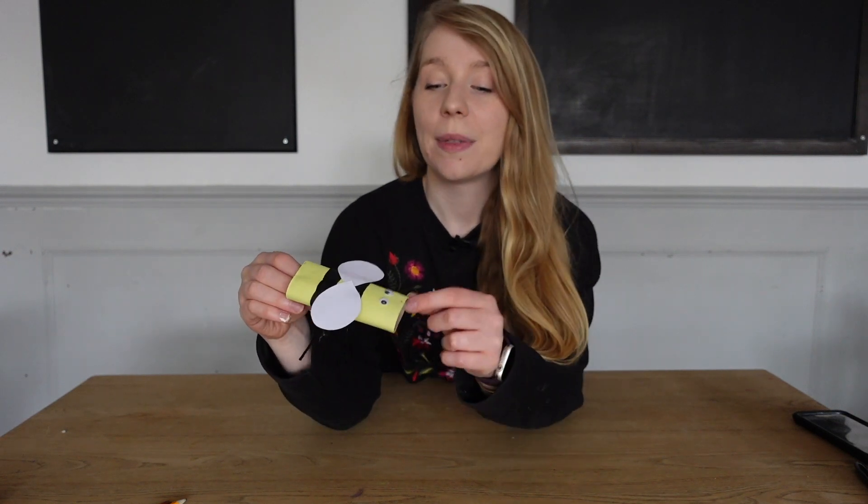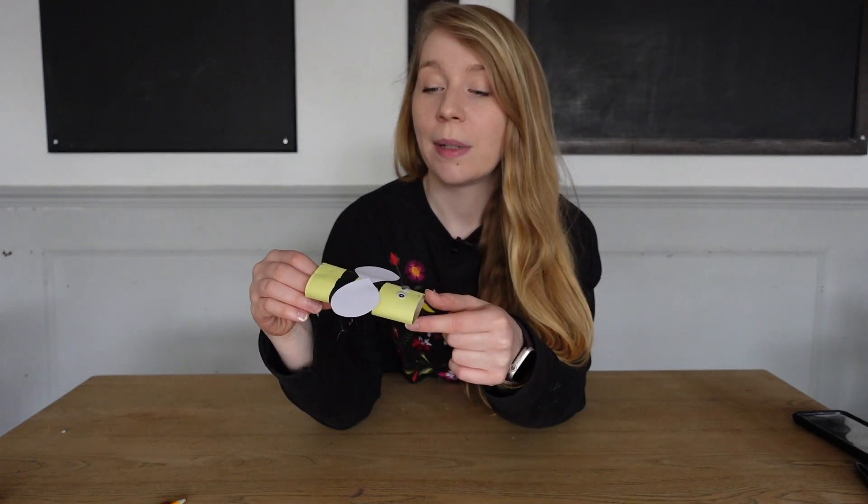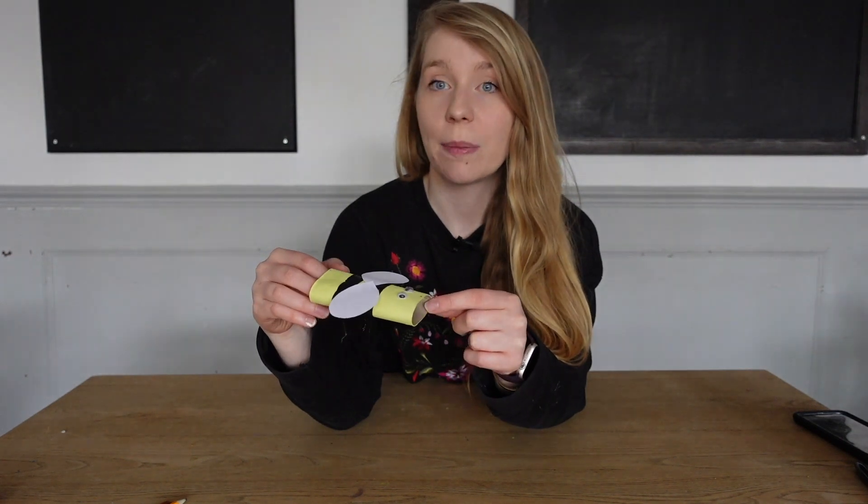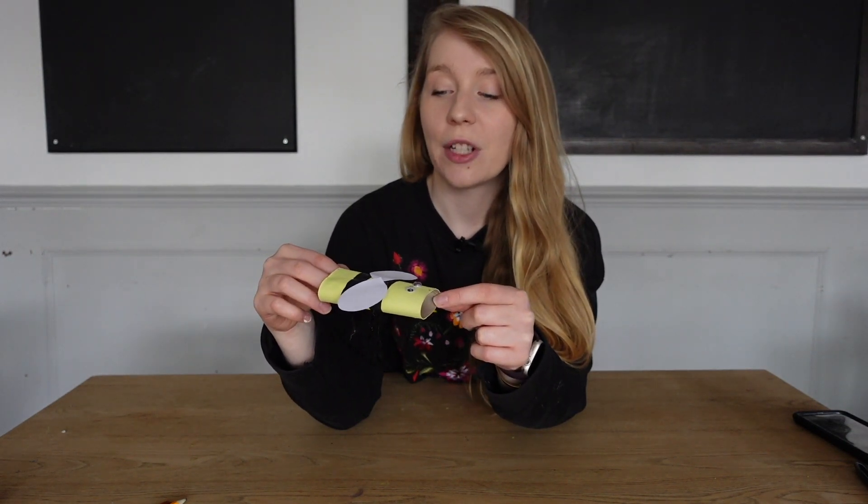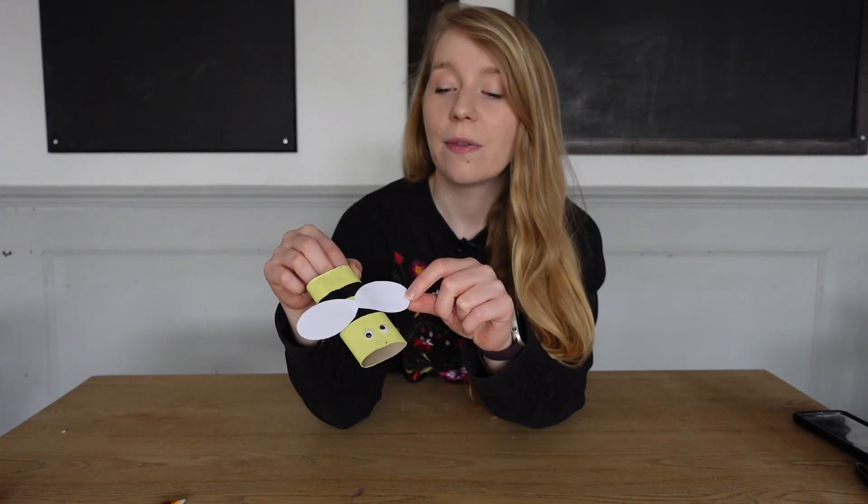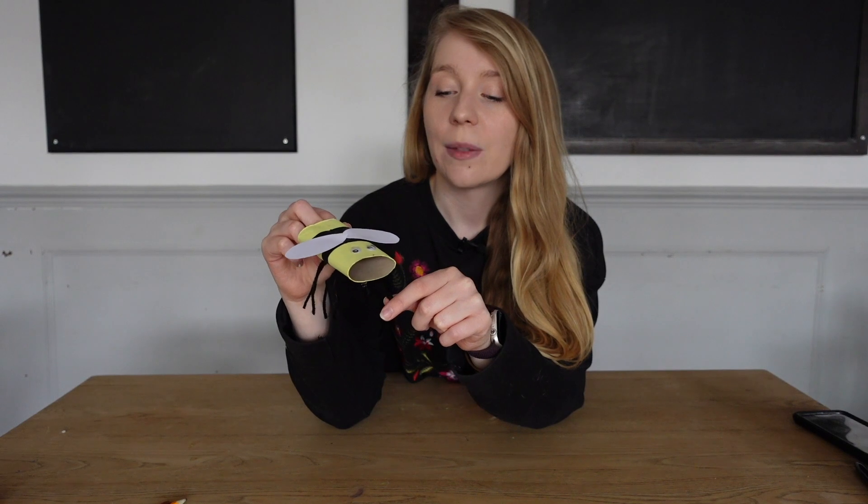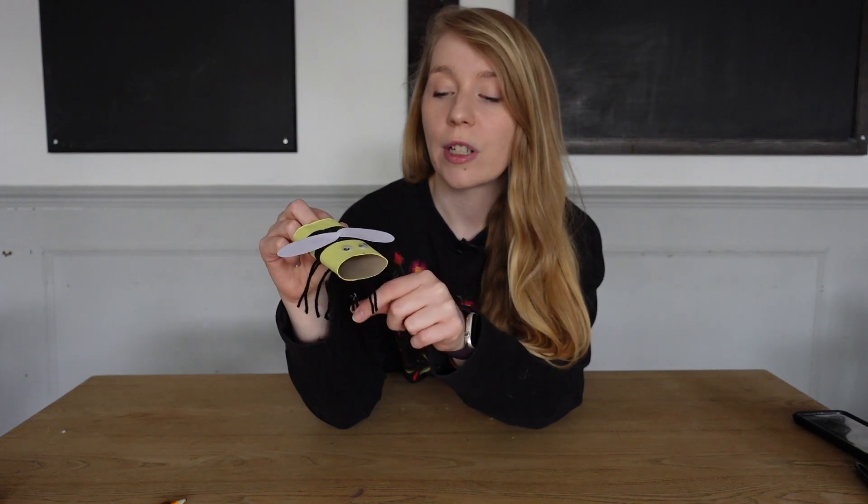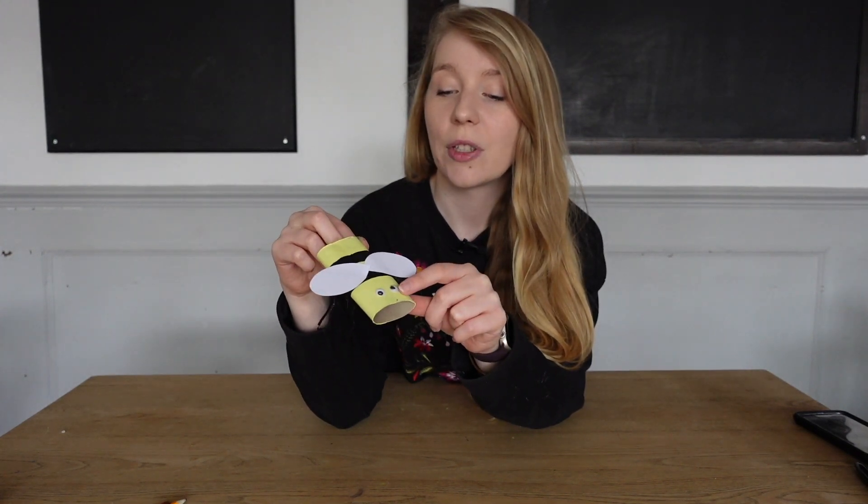So all you're going to need is a toilet roll, some paint, yellow paint preferably. I've used acrylic, you can use poster, and if you don't have paint perhaps you can use some pens that you've got around the house. Some card for the wings, I've got some wool but you can use string as well to make the legs, and some googly eyes.